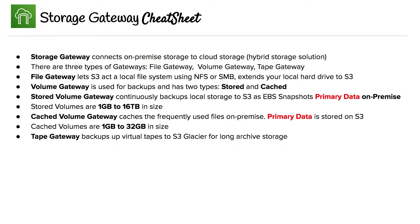We're at the end of storage gateway, and here I have a storage gateway cheat sheet which summarizes everything that we've learned. Storage gateway connects on-premise storage to cloud storage, so it's a hybrid storage solution. There are three types of gateways: file gateway, volume gateway, and tape gateway.